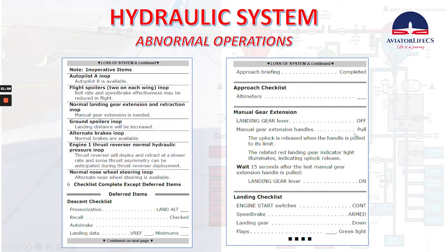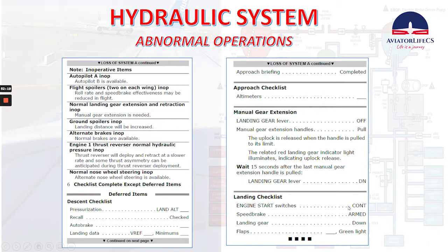Manual gear extension handles — pull. The uplock is released. When the handle is pulled to its limit, remember that the related red landing gear indicator light illuminates indicating an uplock release. Wait 15 seconds after the last manual gear extension handle is pulled. Landing gear lever — down. Complete the landing checklist. This is about the loss of system A.